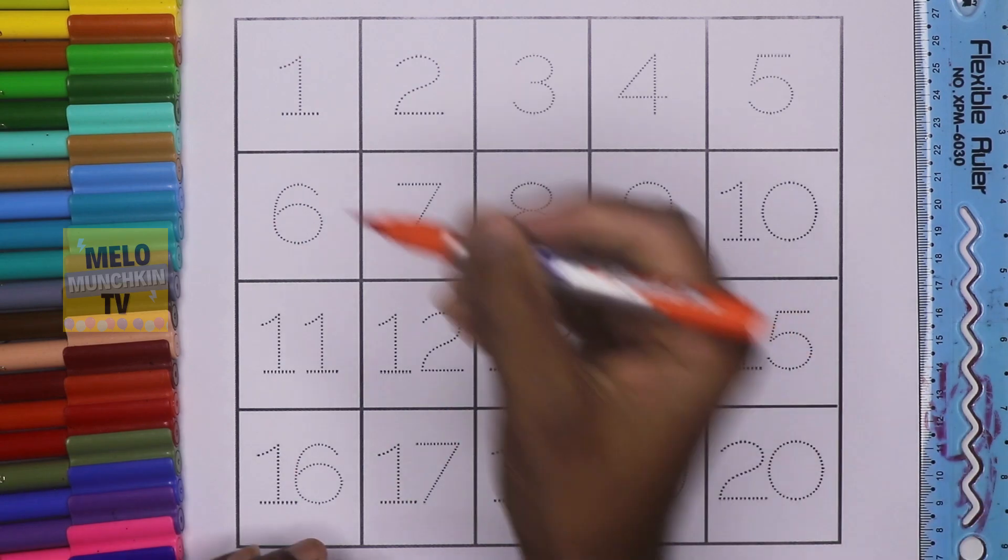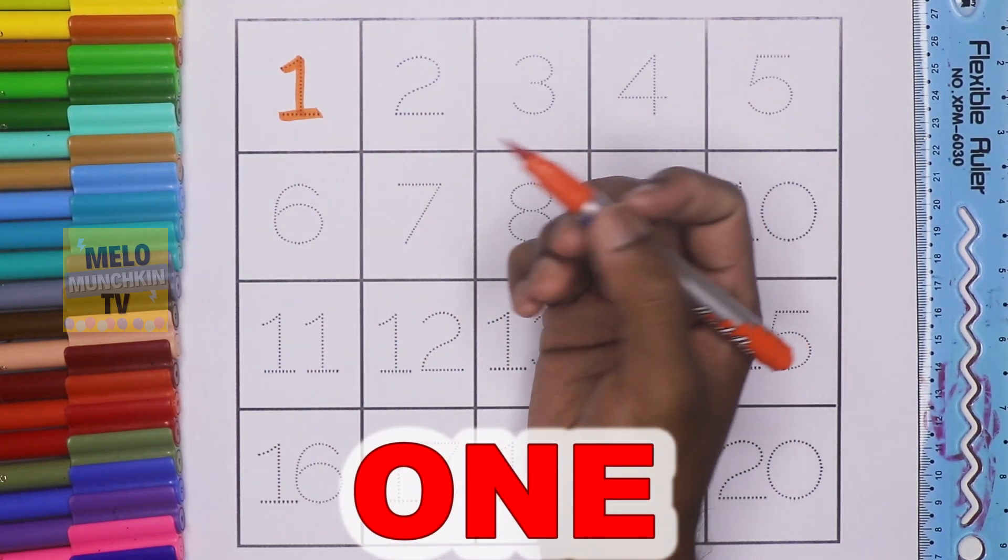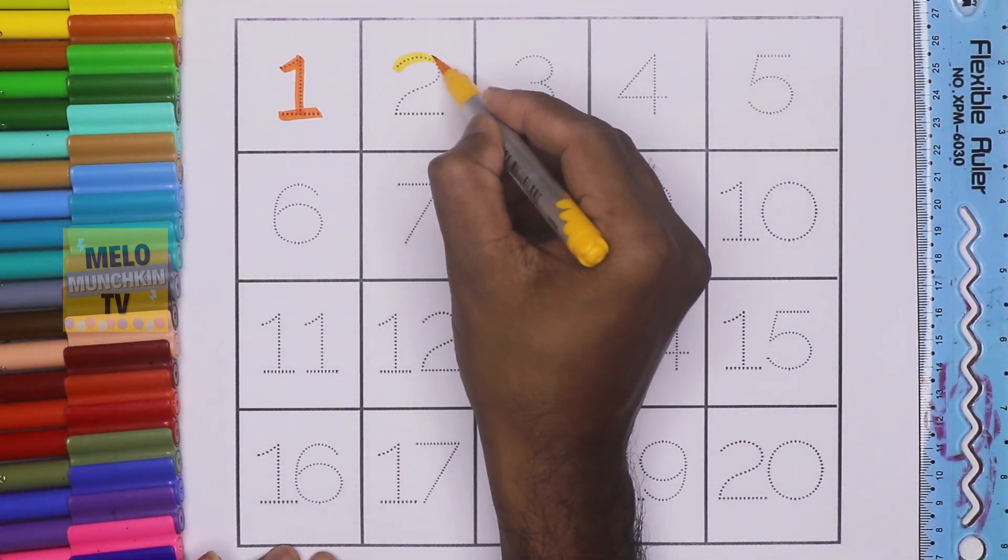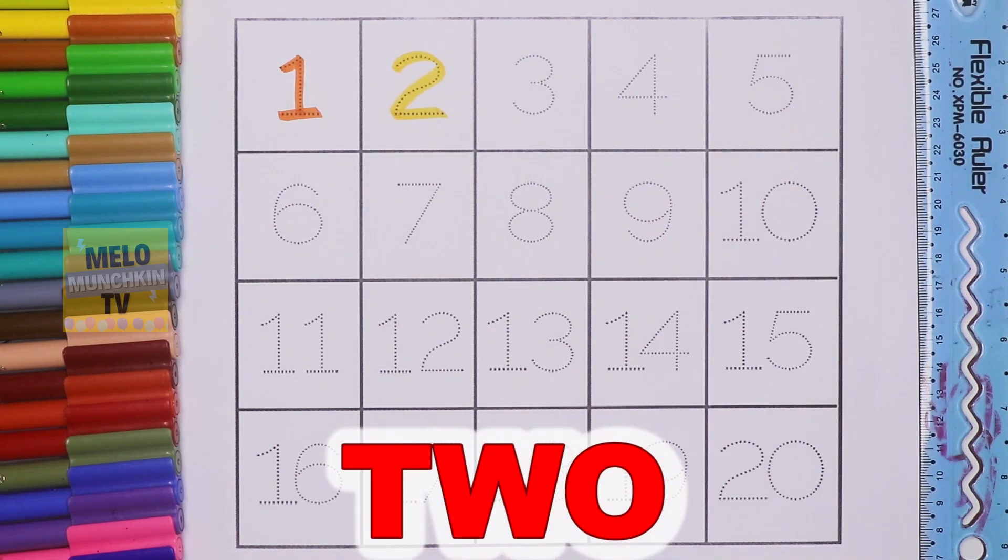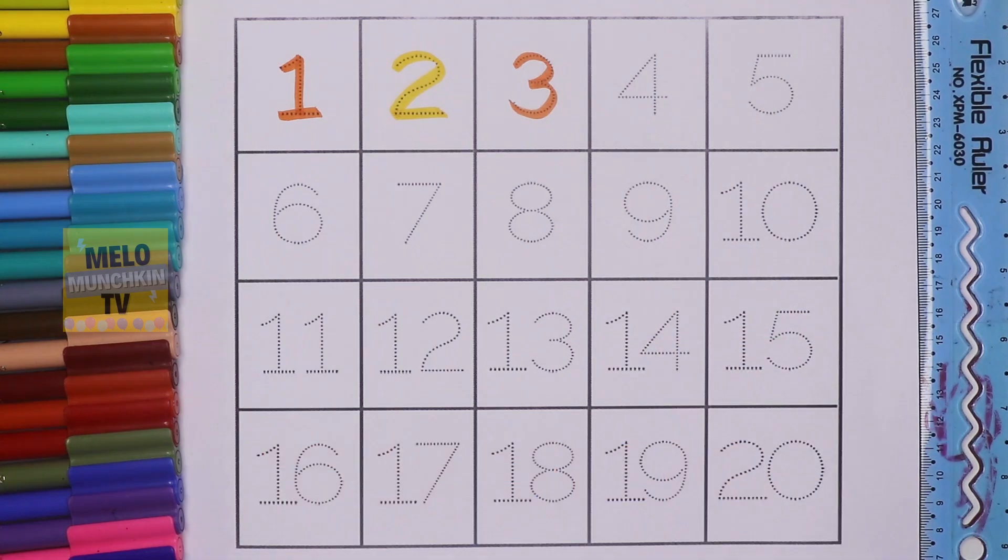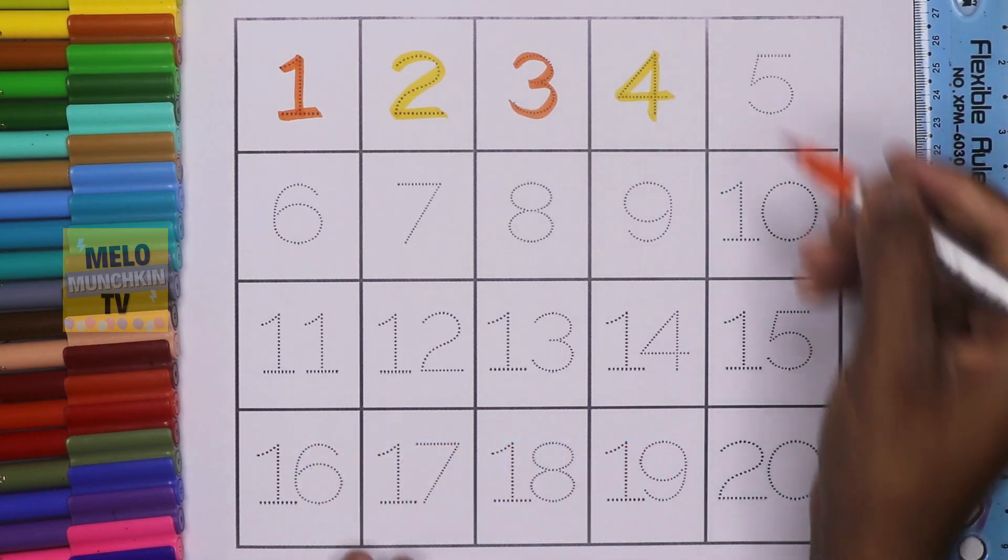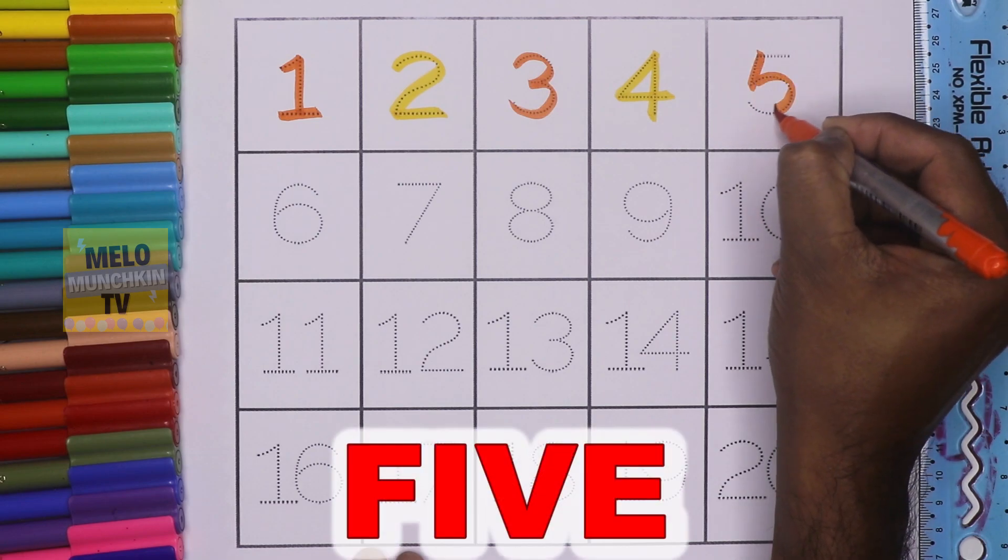Orange color. This is number 1. O-N-E-1. Yellow color. This is number 2. T-W-O-2. This is number 3. T-H-R-E-E-3. This is number 4. F-O-U-R-4. This is number 5. F-I-V-E-5.